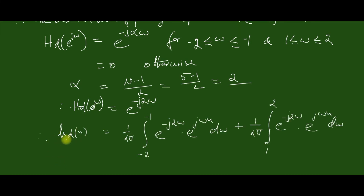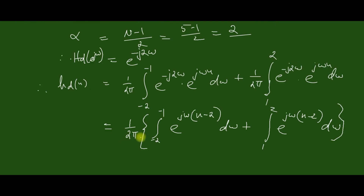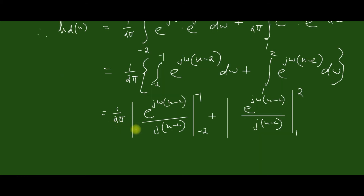Therefore the desired impulse response hd(n) is given by the inverse discrete-time Fourier transform of Hd(e^jω). The frequency ranges are from −2 to −1 and 1 to 2, which we can simplify as 1 over 2π of these two integrals. Integrating, we get the expression in this form.